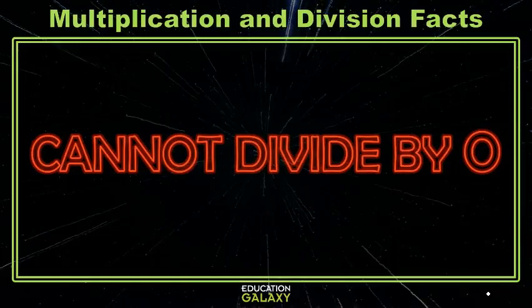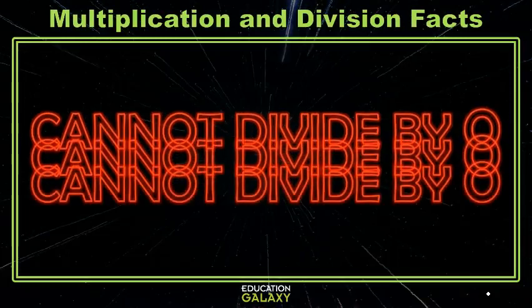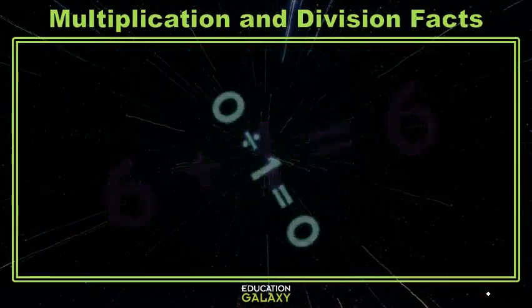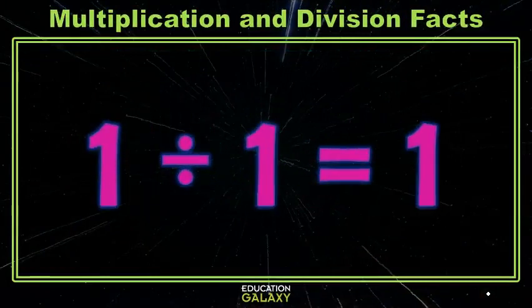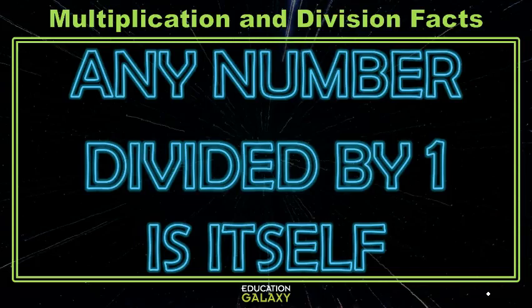A couple rules here. You cannot divide by 0. And any number divided by 1 is itself. So 6 divided by 1 is 6, 0 divided by 1 is 0, and 1 divided by 1 is 1 because any number divided by 1 is itself.